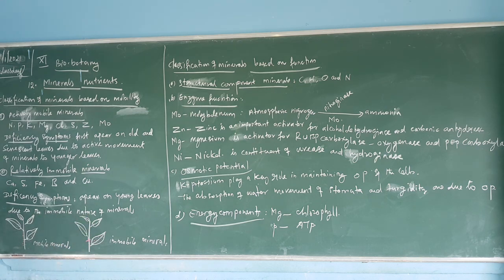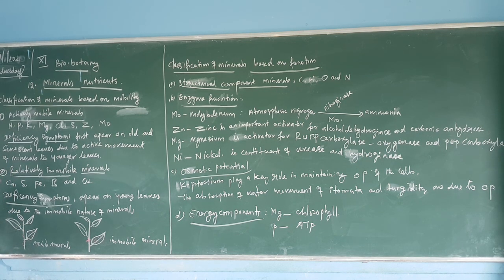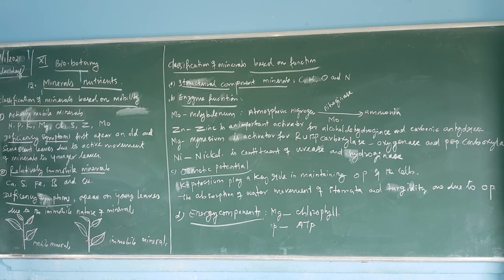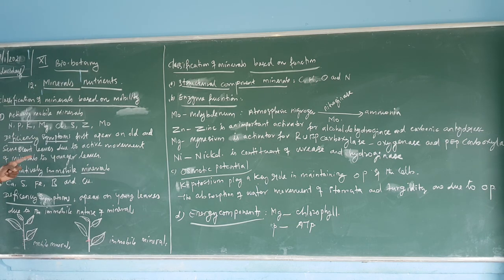So this is the classification of minerals based on mobility — the movement of minerals within the plant. Deficiency symptoms appearing on old and lower leaves are due to the active movement of mobile minerals to younger leaves.